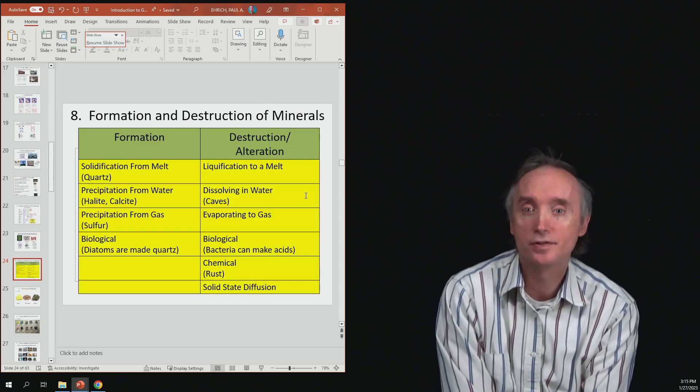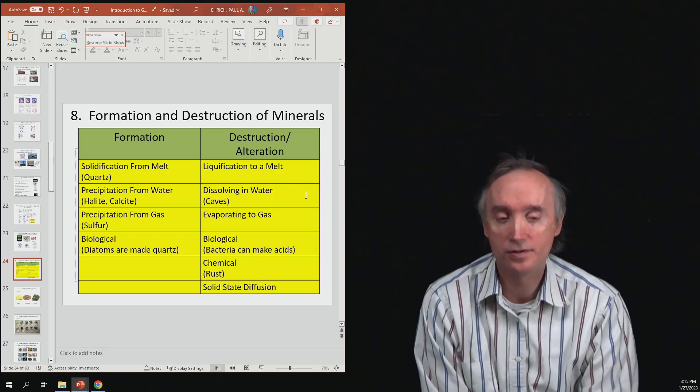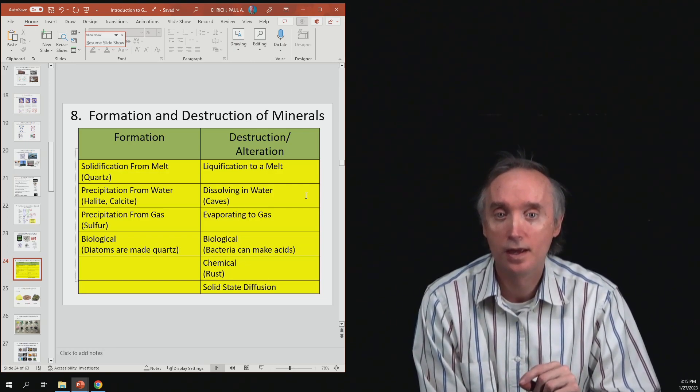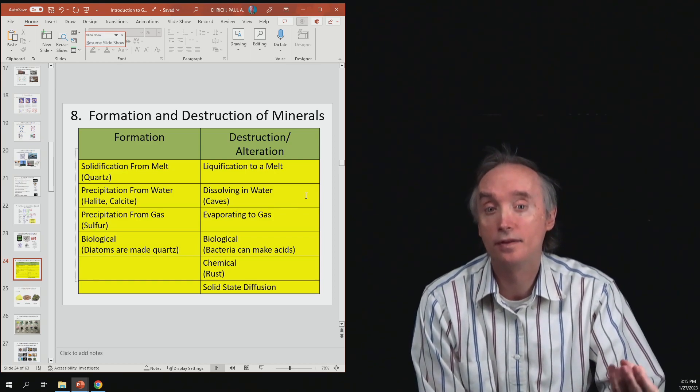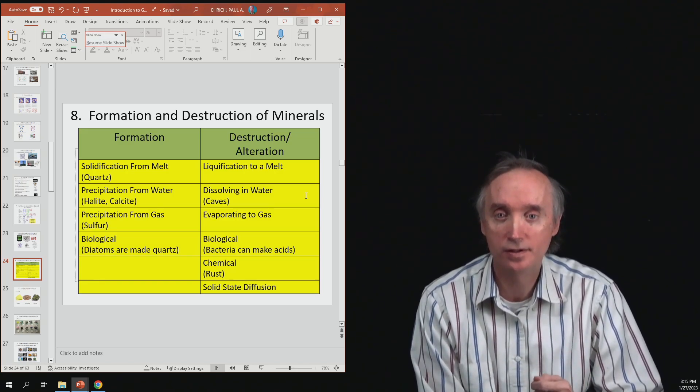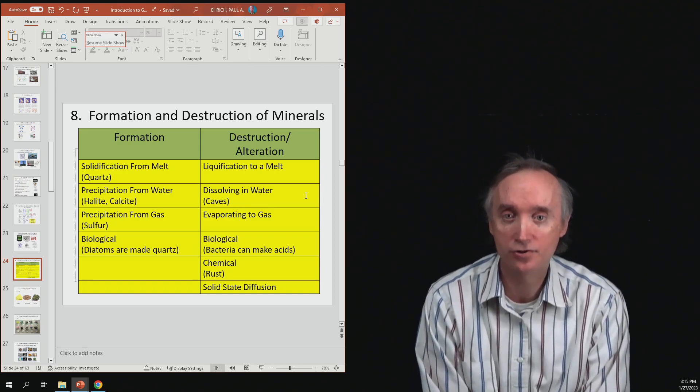The next one is biological. So, for example, there are these microscopic little animals called diatoms, and what they do is they live in the ocean, and they absorb silica, and they use that silica to make their shells with. So, they manufacture quartz.